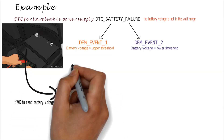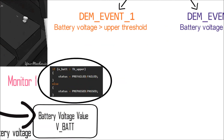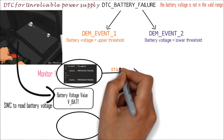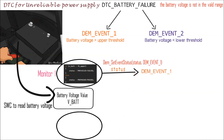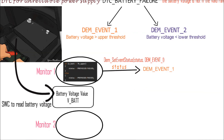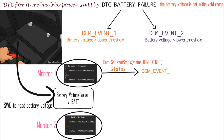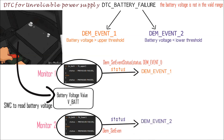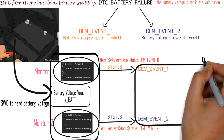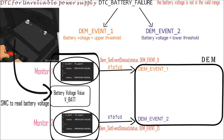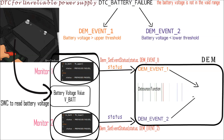Correspondingly, there are two monitoring functions. Monitor 1 checks if battery voltage is greater than the upper threshold and reports the status to DEM event 1 via the DEM_SetEventStatus API. Similarly, Monitor 2 checks if battery voltage is less than the lower threshold and reports the status to DEM event 2. These monitoring functions are implemented in the battery voltage measuring software component. The DEM events are configured in the DEM model, and when these events are reported, debouncing is performed by DEM if configured, for either confirming the fault or healing, and the DTC is updated accordingly.